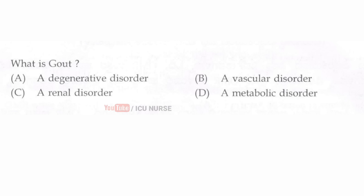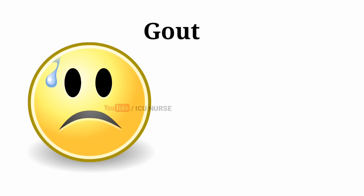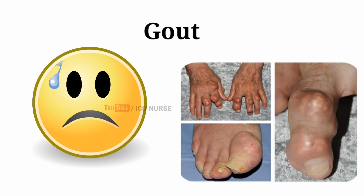What is gout? The correct answer is D, a metabolic disorder. Gout is a type of arthritis which causes sudden attacks of severe pain and swelling around the joints due to the formation of uric acid crystals in the joints and the body's response to this.